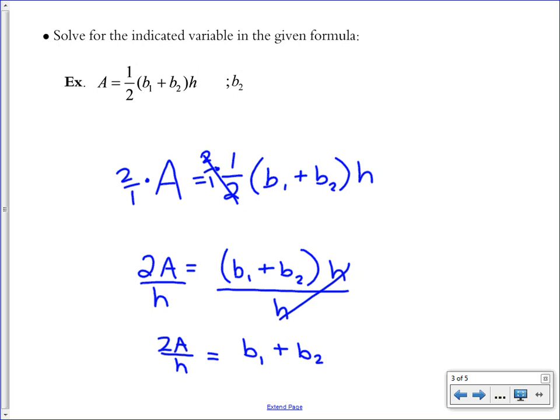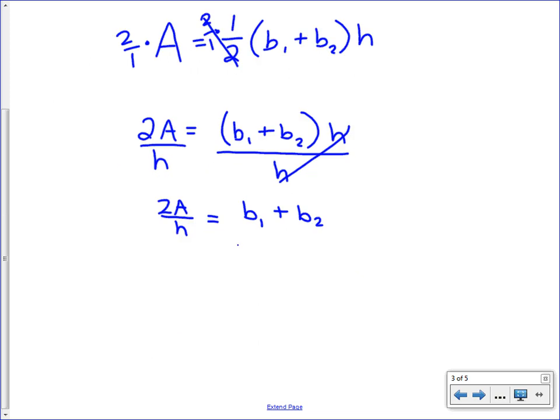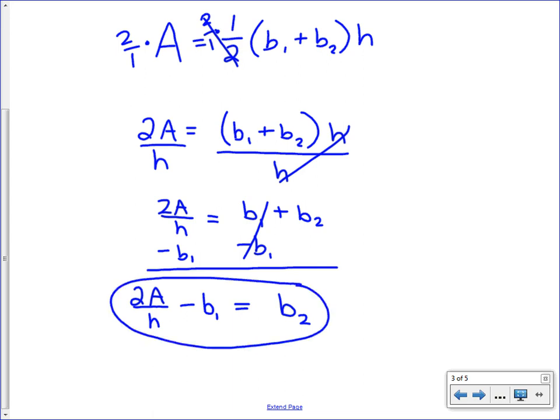Because I was asked to isolate the b2, I want to get rid of b1. I'm going to do that by subtracting, which is the inverse of addition, and subtracting from this side as well. Now, on the left side of the equation, it's looking a bit complicated, but there's nothing for that b1 to combine with. So we just have to write all in a row exactly what we have, 2A on top over h, that entire fraction, minus b1. There's no nicer way to simplify that. Equals b2. And this is an acceptable final answer. There's no need to get a common denominator or do any simplifying on the left. You're simply asked to isolate the b2, which we have done.